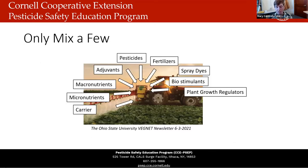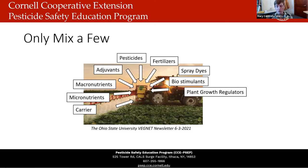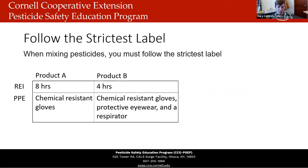Think about everything else that goes into your tank: fertilizers, macronutrients, micronutrients, plant growth regulators, spray dyes, biostimulants. All of these substances can interact with one another, with the water, with your pesticides, and with the carrier's pH, temperature, and mineral content — resulting in incompatibility. This is really why, if you can reduce the number of products you're mixing, you're going to have less chance of incompatibility.